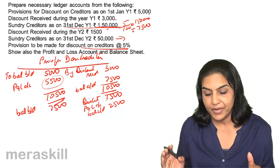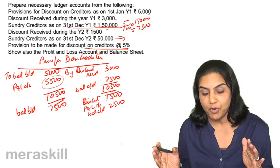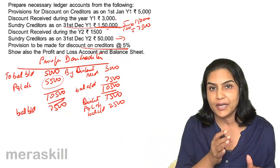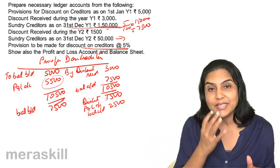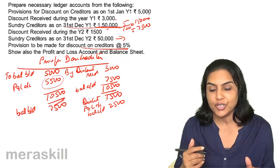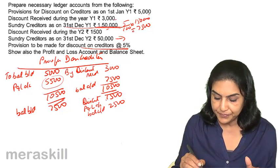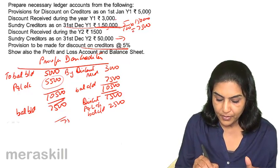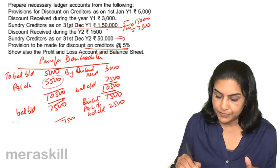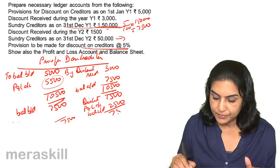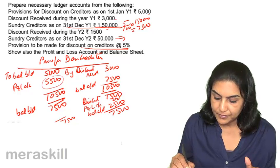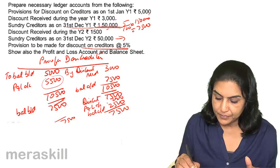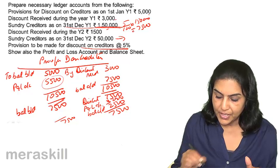In this case it is written back — that means the profit and loss account is now debited for excess provision on discount, which is 3500.